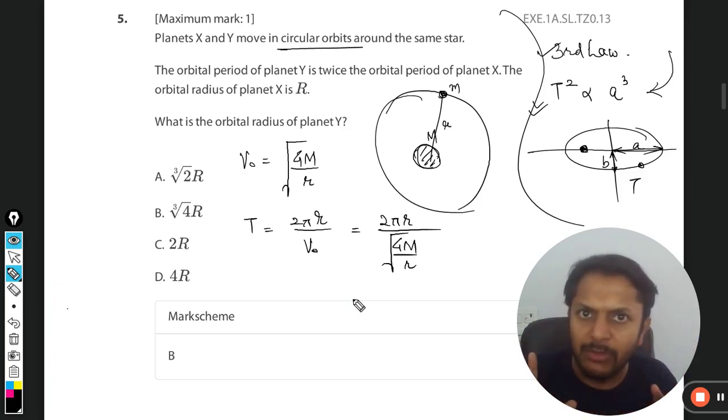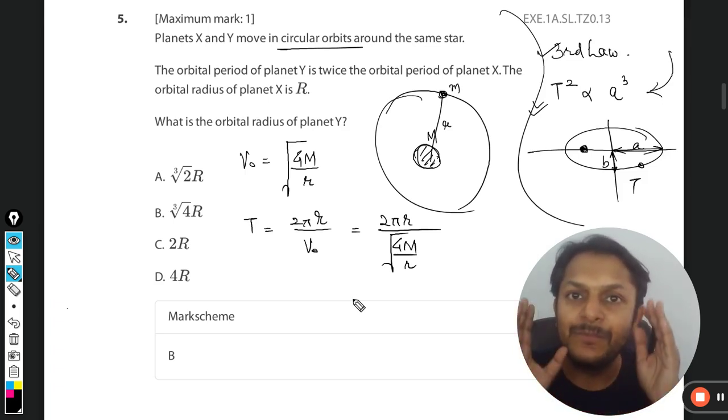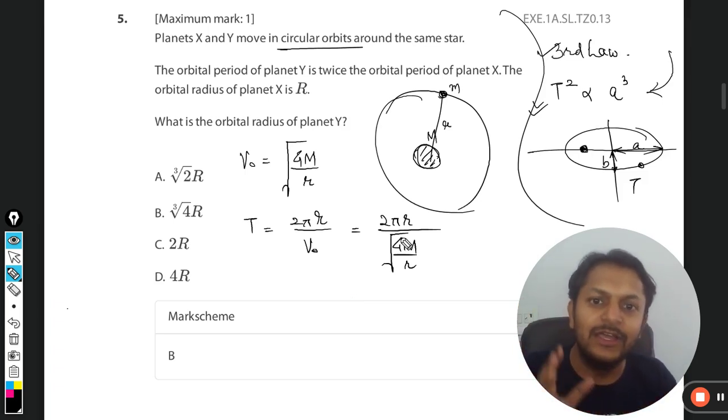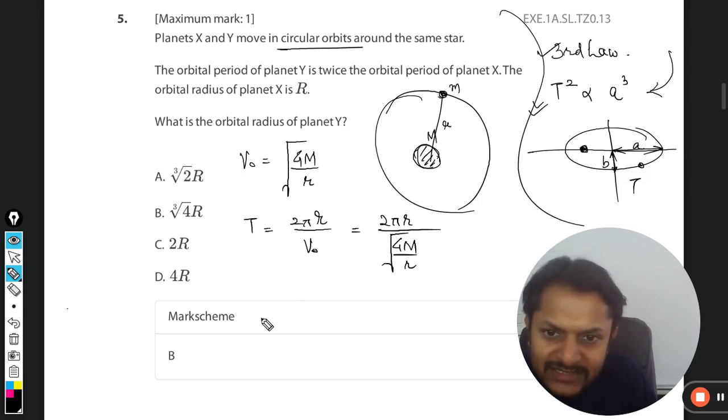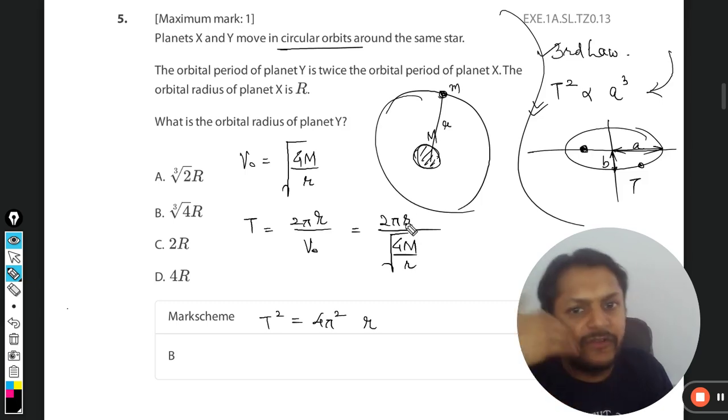No problem up to this, because these things can be done only if we have this assumption that yes the orbit is circular. Now we are going to square this. It will become T² equals 4π²r³/GM. And yes this is our final answer for time.